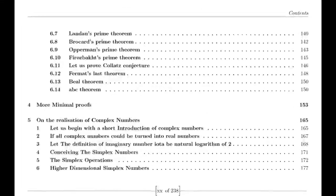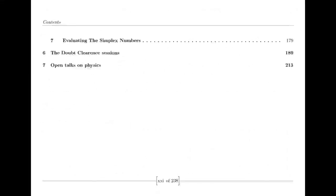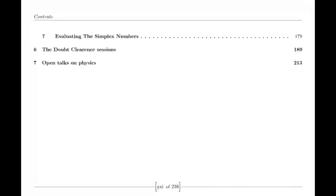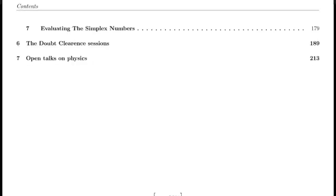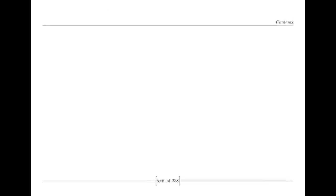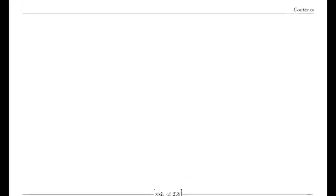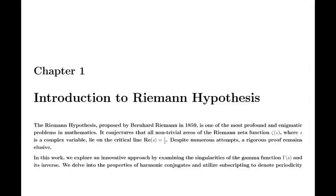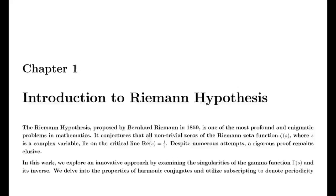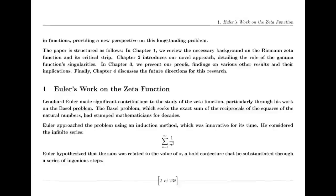Riemann was also influenced by the Dirichlet eta function, defined by an alternating series. This function is closely related to the zeta function and provides valuable insights into its behavior, particularly for values of s less than 1. The relationship between the eta function and the zeta function is encapsulated in a simple formula involving the Gamma function and powers of 2, which helps in understanding the zeta function's properties across different regions.